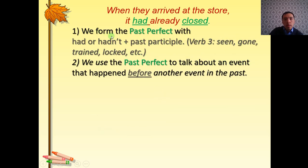We form the past perfect with had or hadn't plus past participle. Past participle is a verb 3, such as seen, gone, trained, locked. Seen and gone are examples of irregular verbs. And trained and locked are examples of the regular verbs. For irregular verbs, you have to simply learn it. And for regular verbs, it's the same as past simple, verb 2.